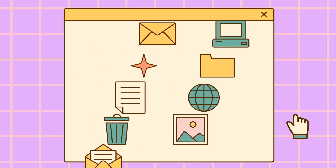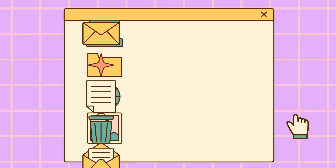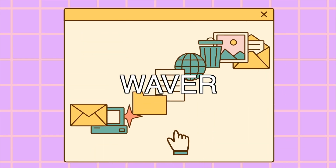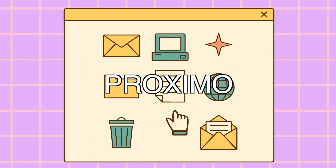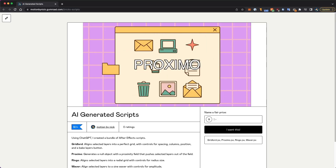In summary, I've made four different scripts, and I need to go back and give them cool names. We have Gridlord, Ringo, Waver, and Proximo. There's a link in the description to download all of these scripts for free. Let me know in the comments: would you pay for scripts like these if you didn't know they were AI-generated? Or maybe even if you do know they're AI-generated?